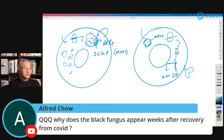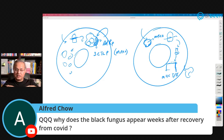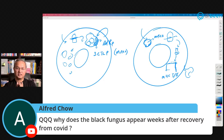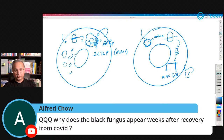Alfred Chau asks why black fungus (mucormycosis) appears weeks after recovery from COVID. It is actually not weeks after recovery — it happens because during COVID we give broad-spectrum antibiotics, the immune system is suppressed, diabetes goes out of control, or steroid use is increased. At-home use of nasal cannulas or oxygen devices that may not be clean also contributes. Rather than saying weeks after recovery, we should say: as soon as the body reaches a state of acidosis — whether in hospital or at home — mucormycosis takes hold and starts growing, causing damage to the nose, jaw, lungs, and brain.